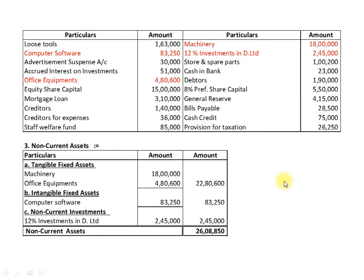Our next requirement is Non-Current Assets. From the above information, we have Computer Software, Office Equipments, Machineries, and 12% Investments in D Limited, which belong to Non-Current Assets. Now let us classify them into subheads. The first subhead is Tangible Fixed Assets, in which we have Machineries Rs.18,000 and Office Equipments Rs.4,80,600. There is no other information like depreciation for Machineries or Office Equipments; otherwise, we would deduct that depreciation from the value of the assets.